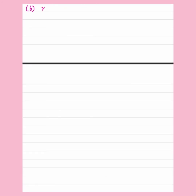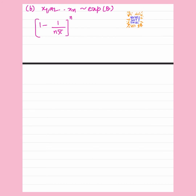Solving part B: we have been given n units taken from an exponential distribution with mean theta and we are using an estimator (1 minus 1 upon n·X-bar) to the power (n-1) in order to estimate e to the power (minus 1/theta), where n·X-bar is greater than 1, and 0 is used when n·X-bar is less than 1.